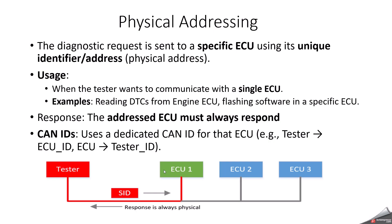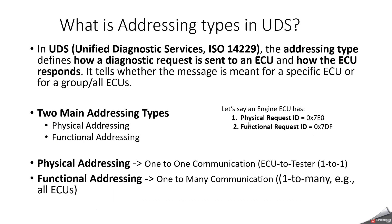The usage of physical addressing is when the tester wants to communicate with a single ECU. For example, you want to read the DTC from an engine ECU or flash software to a particular specific ECU. Mainly, physical addressing will be used on the testing side after development is done. The addressed ECU must always respond, and you will use a dedicated CAN ID for that ECU — for example, 0x7E0.